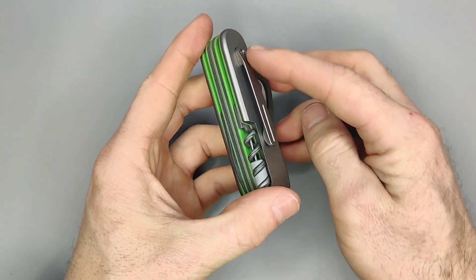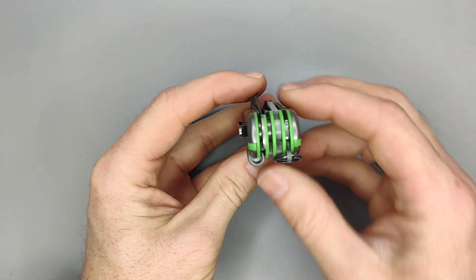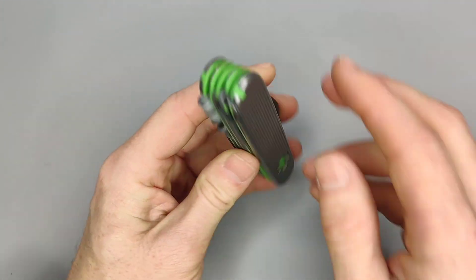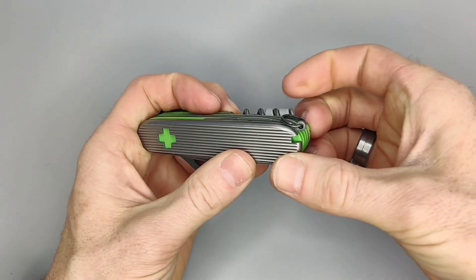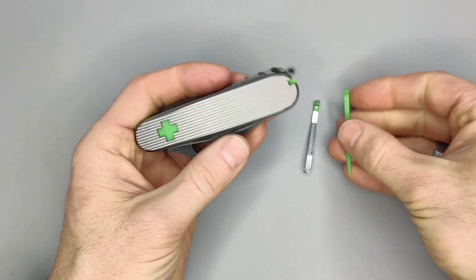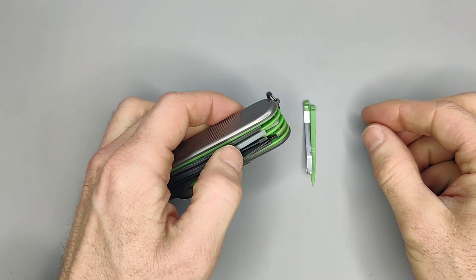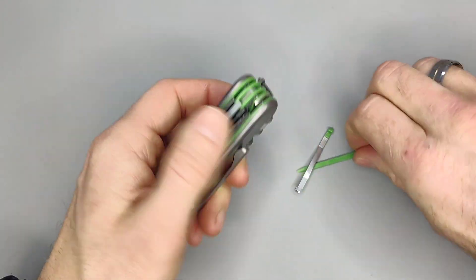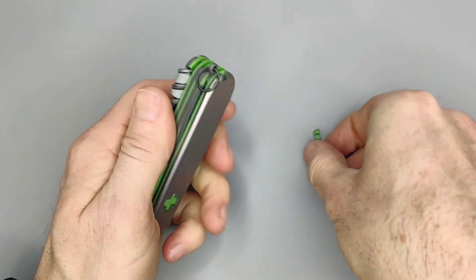You probably noticed these scales have a pocket clip on them. Something that really matches almost perfectly are the new Victorinox tweezers and the pick. The colors match absolutely perfectly, I think they blend in very well and look really nice on this knife.